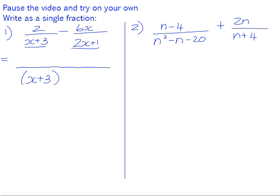Our LCD will be (x+3) multiplied by (2x+1). We need to multiply this denominator by 2x plus 1, so we do the same in the numerator. And we need to multiply this denominator by x plus 3.